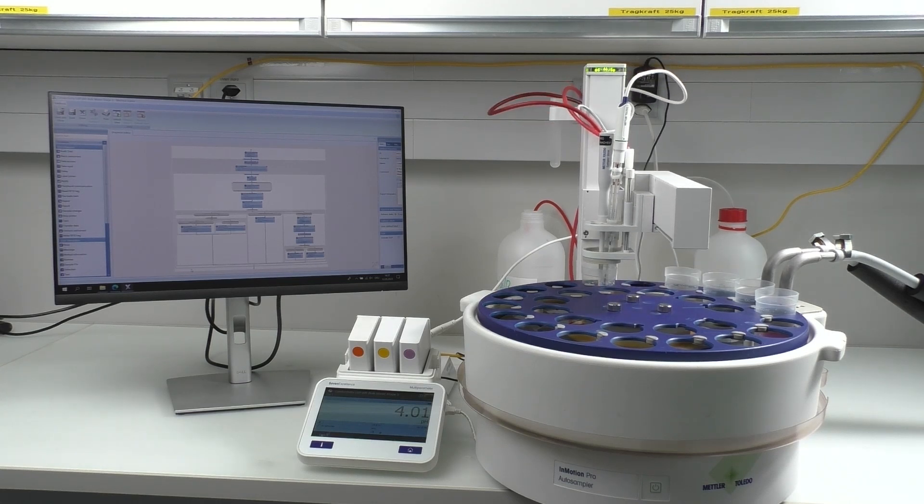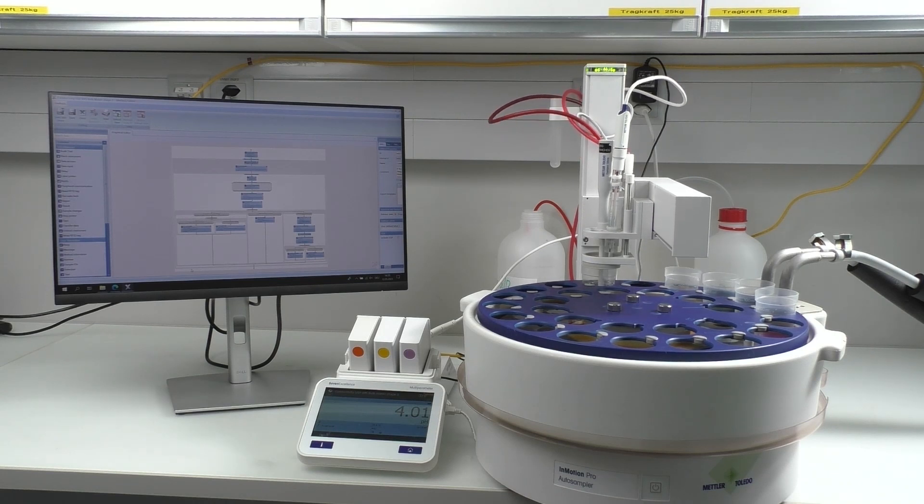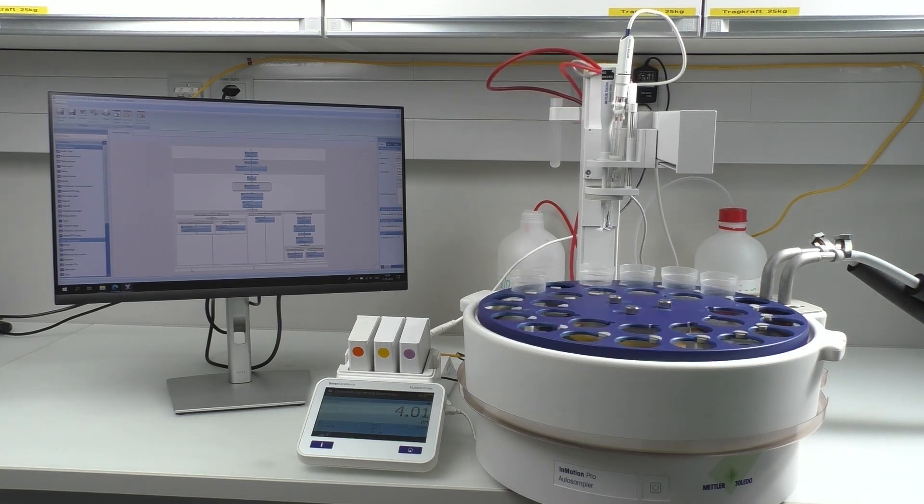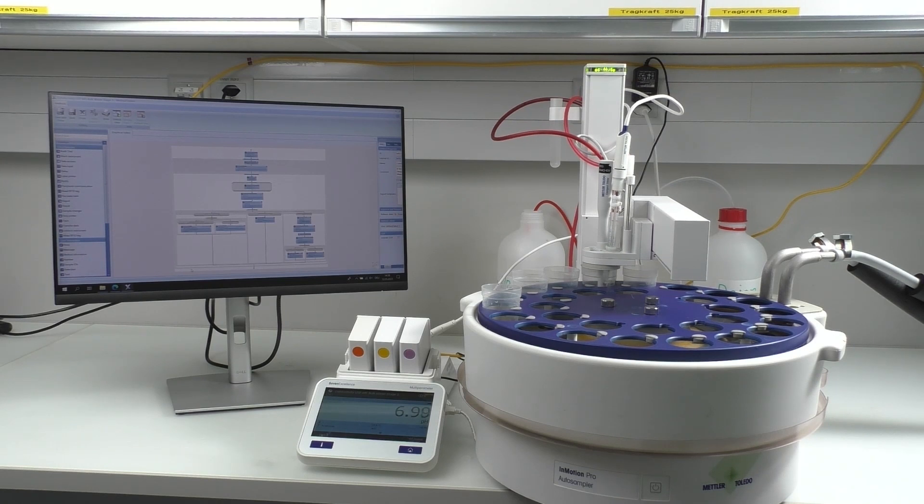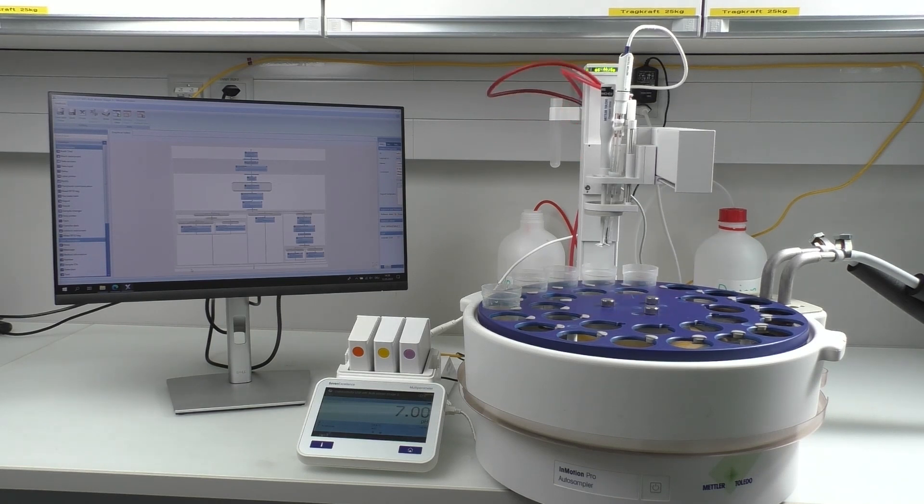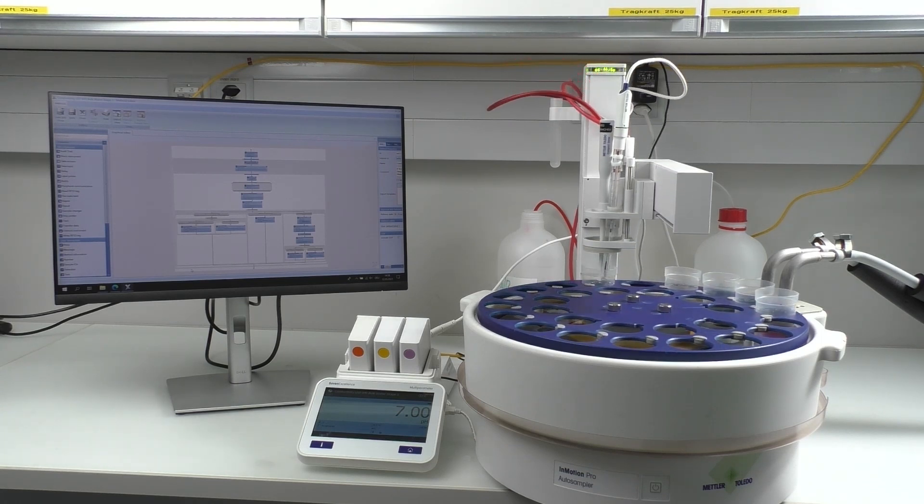If the slope is in the range of 90 to 110 percent, and the offset is plus or minus 20 millivolts, it means that the electrode meets the requirements of USP645. If not, the system will stop the process, and the electrode should be switched to a new one. This is automatically controlled to avoid random errors.